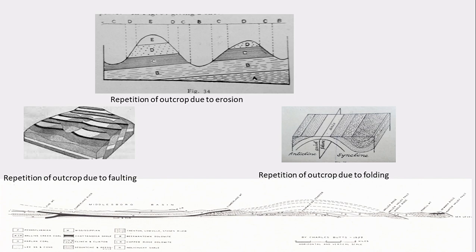The second cause is folding. Consider a fold with five formations — one through five. When traversing, you encounter A, then B, then C, then D, and then D again, then C, then B — like a mirror plane, similar to a symmetrical plane in crystallography. Moving from the axial plane towards the left: D, C, B. Moving towards the right from the axial plane: D, C, B. This is called symmetrical repetition, and it is only seen in folded beds.